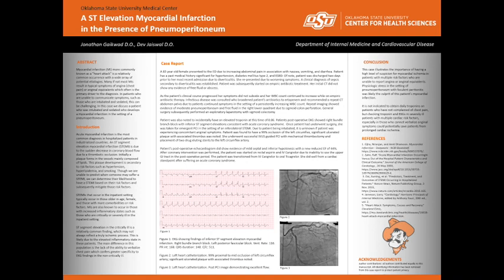In figure one, we're able to see her EKG, which shows findings of inferior ST-segment elevation in leads 2, 3, and AVF, as well as T-wave inversions in 3 and AVF. We can also see the right bundle branch block with the RR' in V1 and V2 and the reciprocal changes in V5 and V6. She also has a left posterior fascicular block. Her rate was tachycardic at 116. PR interval was within normal limits at 168. QRS duration was prolonged at 148, as expected with a bundle branch block, and the QTc was also prolonged at 511.